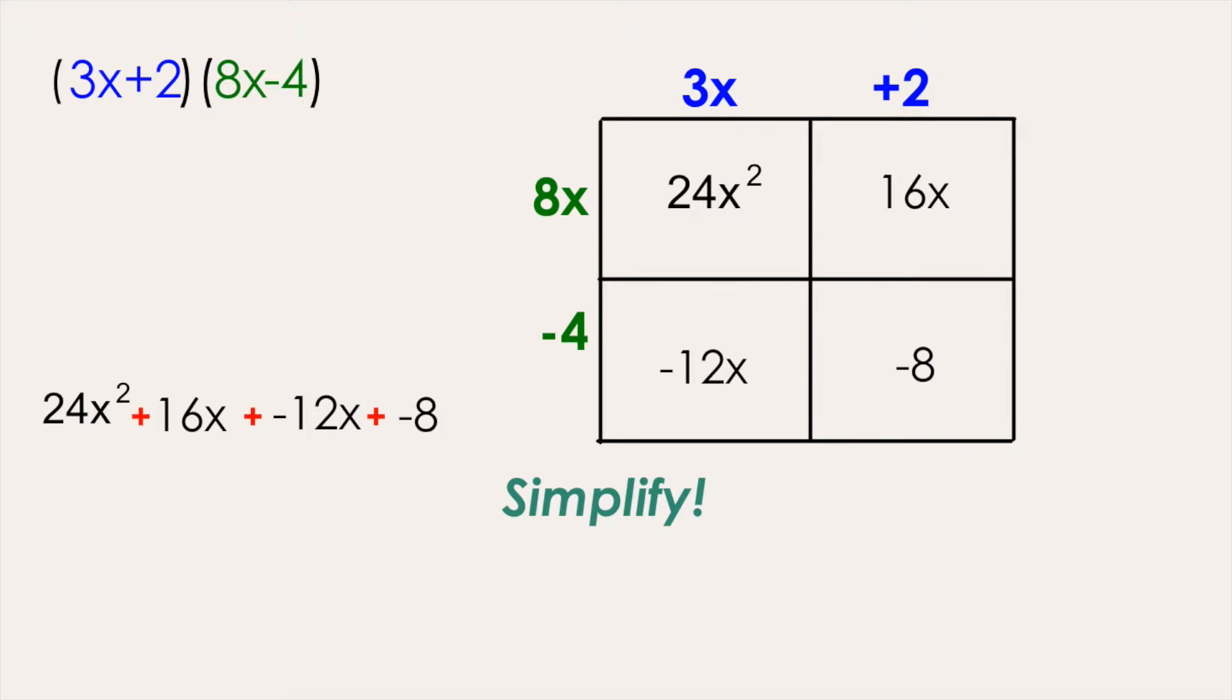Now you can begin to simplify. You want to combine any like terms. 16x and negative 12x are like terms because they each contain only 1x, and when you add them together, those simplify to a positive 4x.